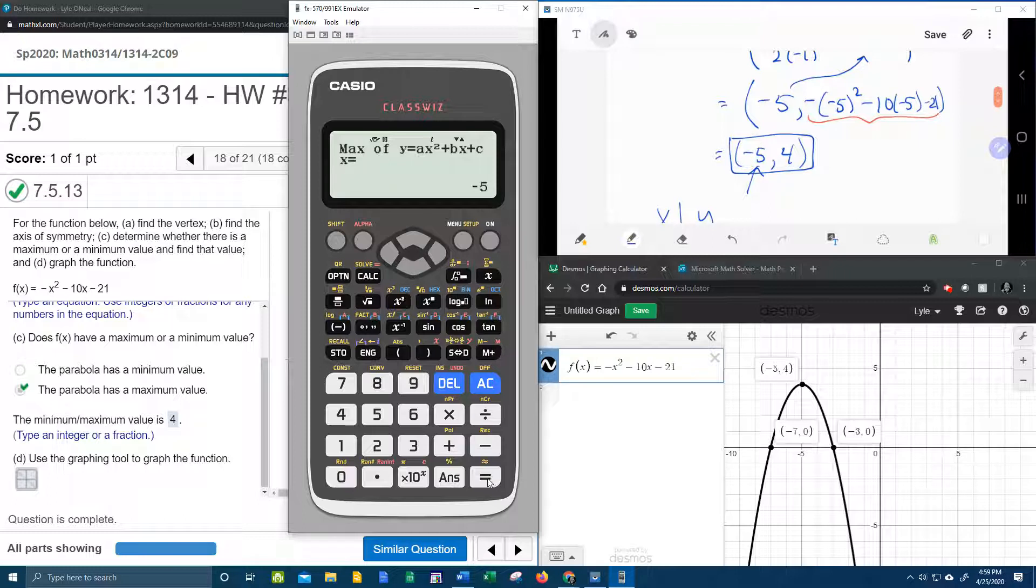And if I hit Equals again, that's going to give me the y-coordinate of the vertex, which is 4. So the ClassWiz gets your vertex and your x-intercepts for you. That's kind of cool, actually.